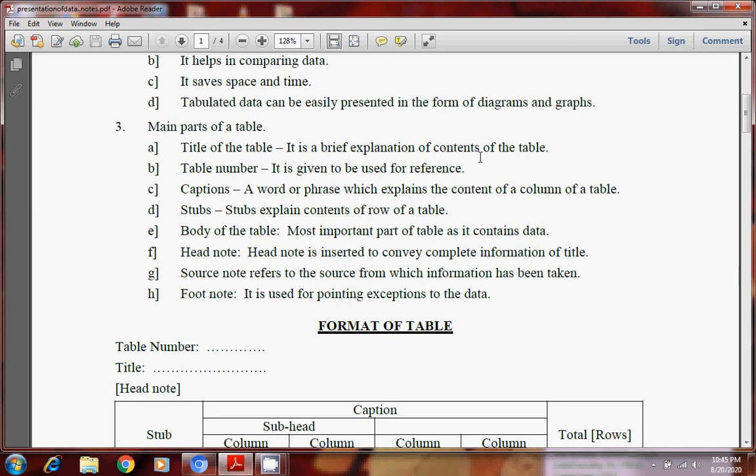Then captions. A word or phrase which explains the content of a column of a table. That is called caption. Means column heading. Stubs. Stubs explain contents of row of a table. So row heading we can say, those are called stubs. Then body of the table. Most important part of table as it contains all the data. Head note. Head note is inserted to convey complete information of title. Like title only shows a short information like what this table is storing. But head note is inserted to convey the complete information about title.